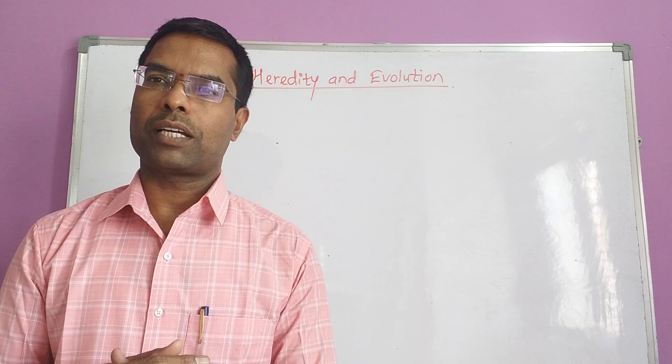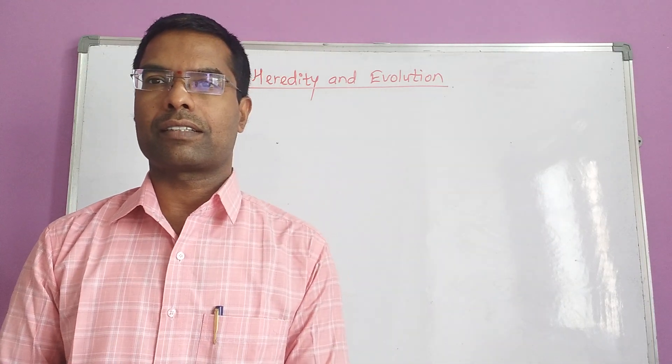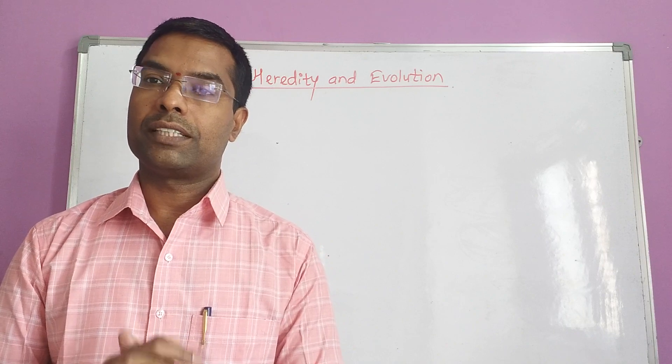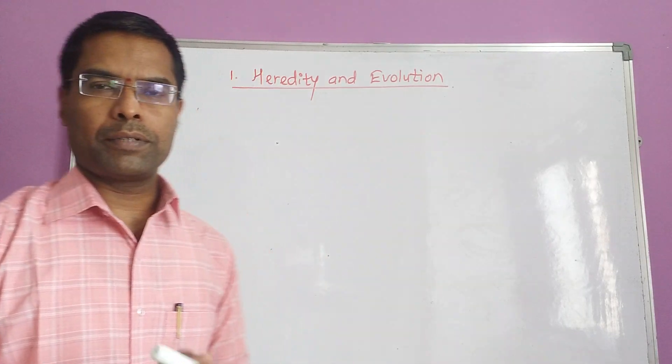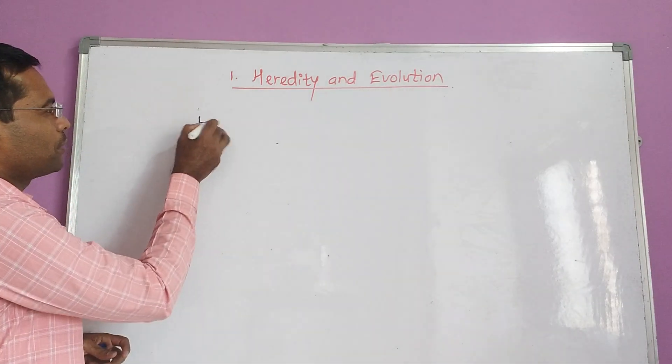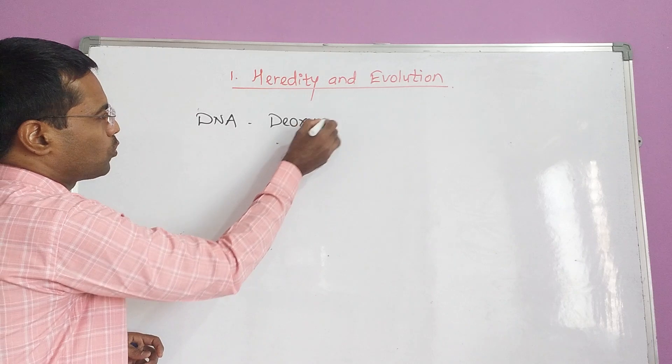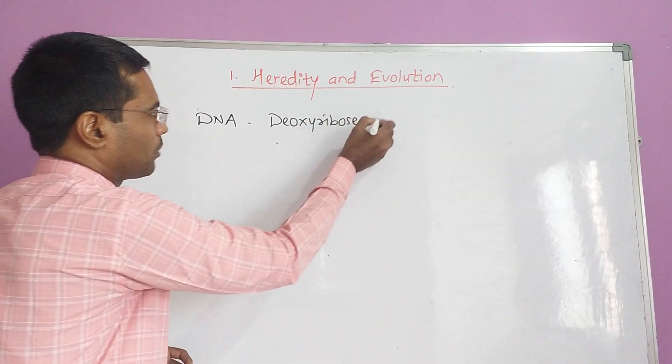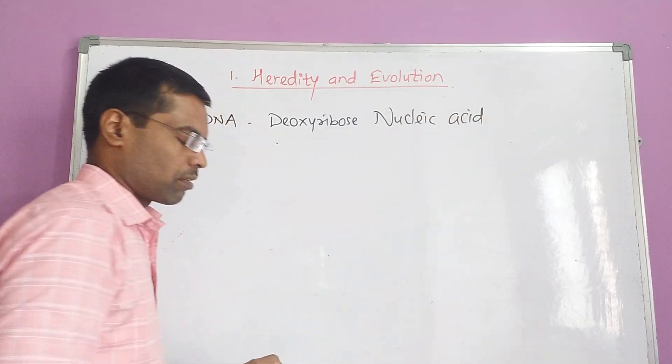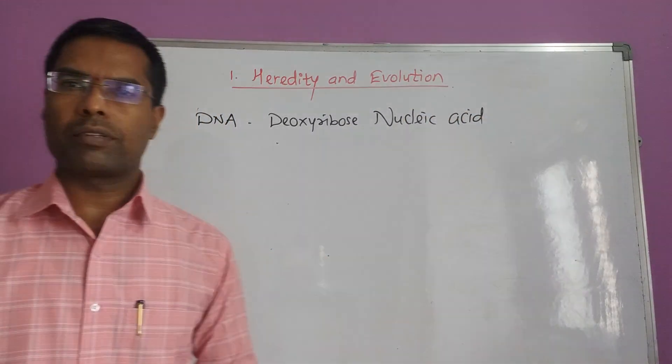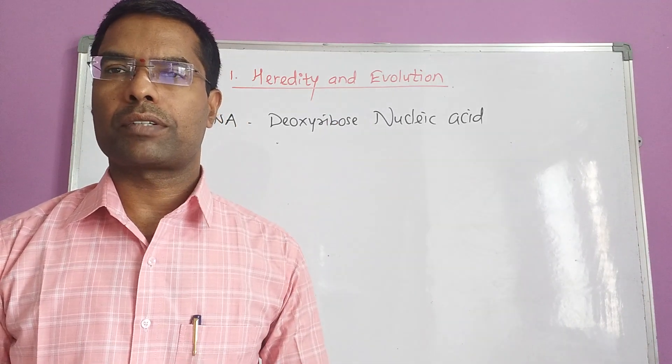But before that, we should have to revise the concept that we have studied in the 8th standard and 9th standard, that is the structure of the DNA. What is the structure of DNA? You know that DNA means the full form of DNA is Deoxyribose or Deoxyribose Nucleic Acid. The Deoxyribose Nucleic Acid, it is actually the polymer of nucleotide.